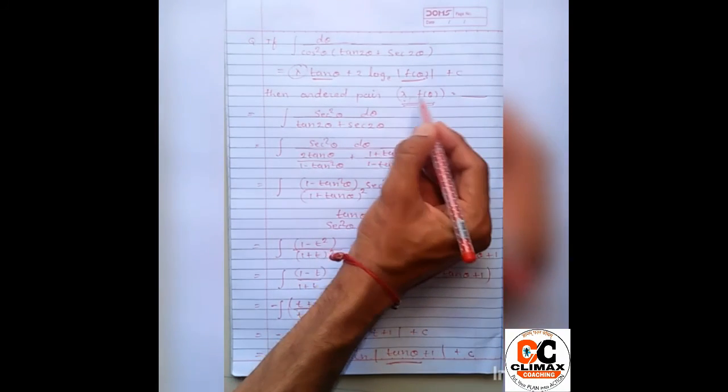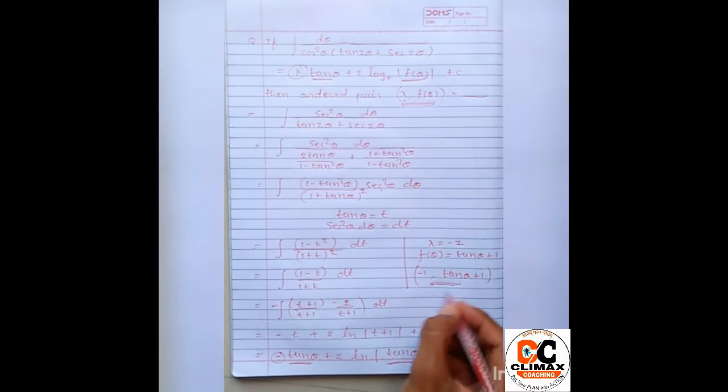And that's why we can find this ordered pair is minus 1 comma tan theta plus 1 and this ordered pair represents lambda comma f of theta and this is our answer.